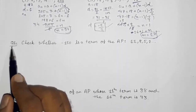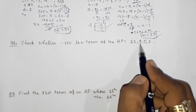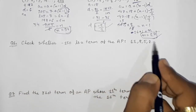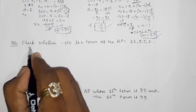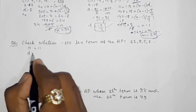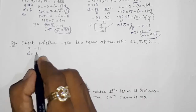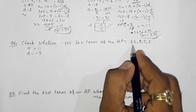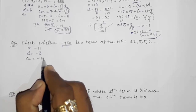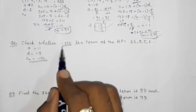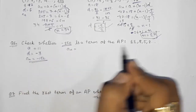Moving to question number 6: check whether −150 is a term of the AP 11, 8, 5, 2, ... We have to check if −150 is a term of this AP or not. First, make a list: a = 11, d = 8 − 11 = −3. And −150 is the candidate nth term. We'll find n and then check.